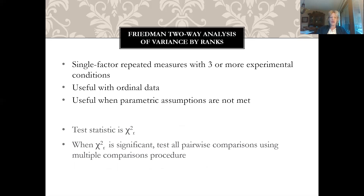The Friedman two-way analysis of variance by ranks is for repeated measures with three or more conditions. It's useful with ordinal data and when parametric assumptions are not met. The test statistic is called chi-square r, and when chi-square r is significant, you test all pairwise comparisons using a multi-comparison procedure. SPSS handles all of this for you.